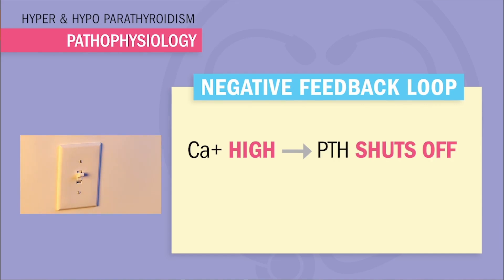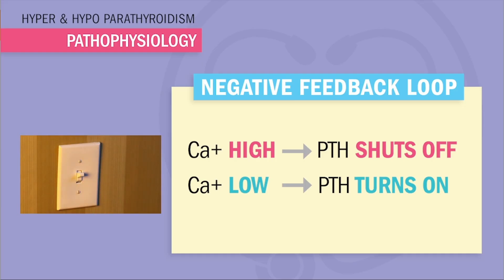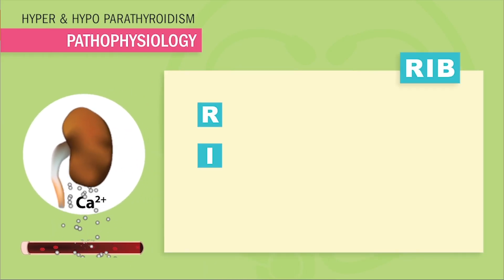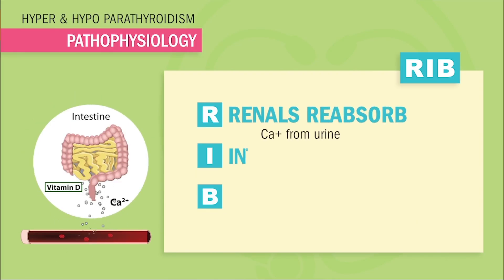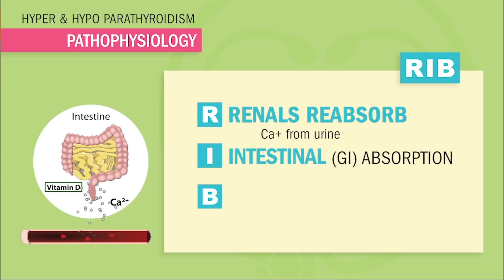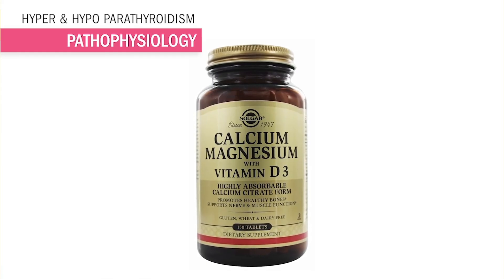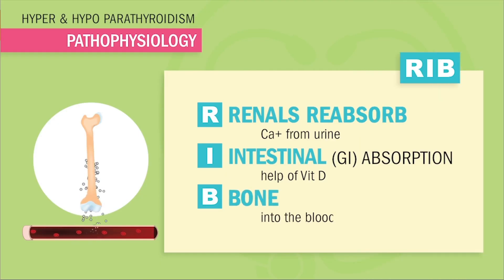Think of PTH like a thermostat — negative feedback loop. When calcium's high, PTH shuts off; when calcium's low, PTH turns on. Calcium is increased in the blood three ways — remember the acronym RIB. R is for renals, which reabsorb calcium so it's not lost in urine. I is for intestines, which absorb calcium from food with the help of vitamin D activation — calcium, magnesium, and vitamin D all work together. B is for bone — our bones are made mostly of calcium, and when your body needs more calcium, it drains the bones to get it.